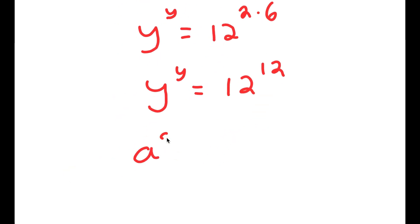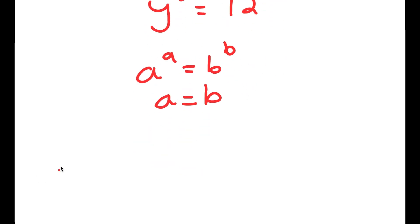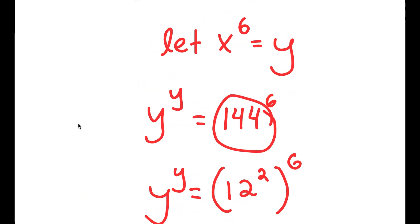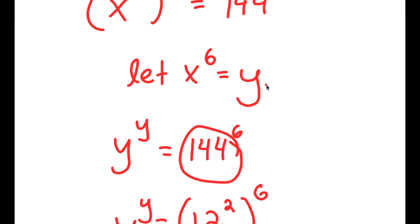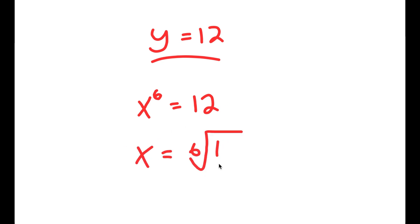So I have y to the power of y is equal to 12 to the power of 12. If a to the power of a equals b to the power of b, then a equals b. So y equals 12. Now remember we let x to the power of 6 equal y, so x to the power of 6 is equal to 12, meaning x is equal to the 6th root of 12.